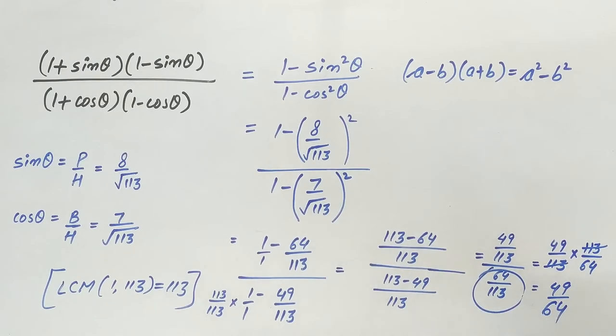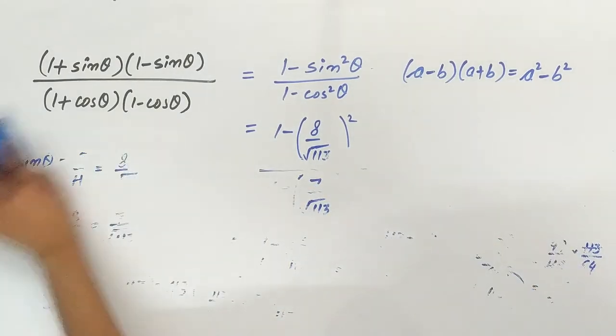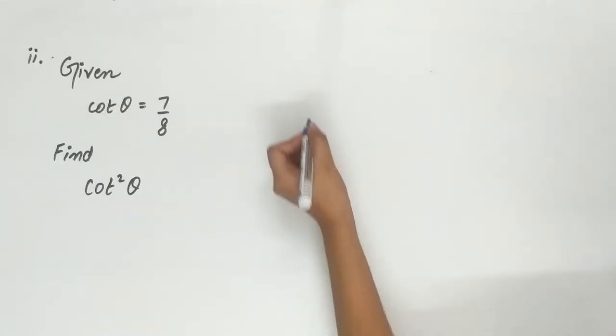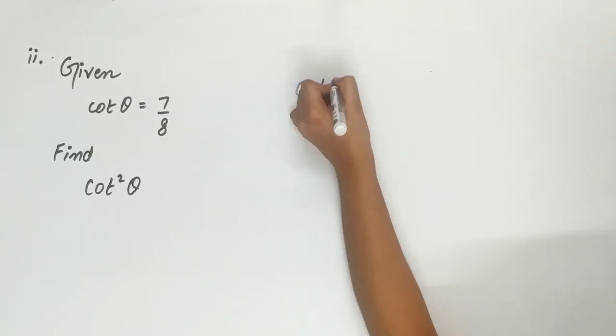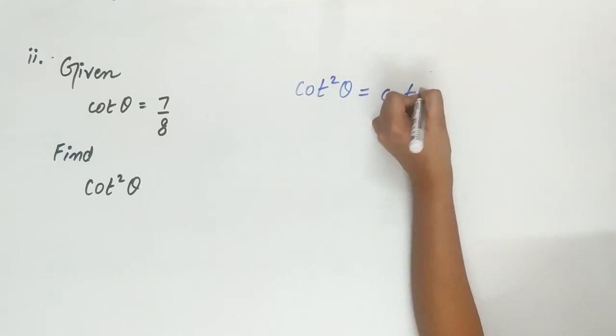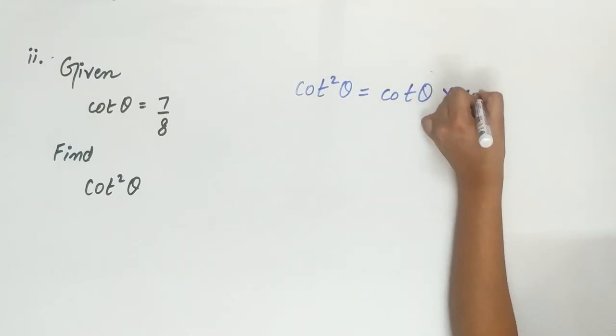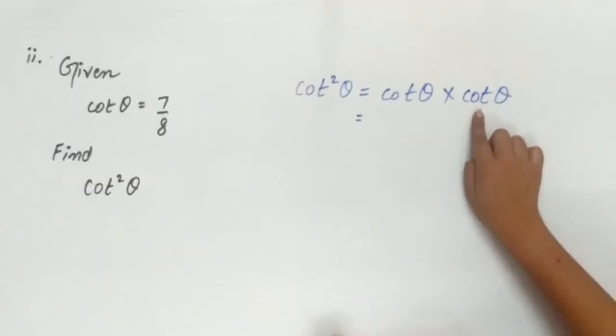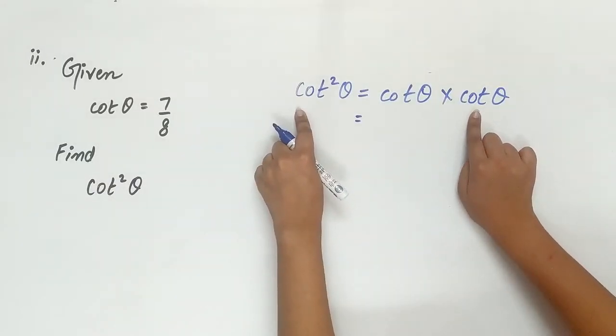This brings us to an end of part 1. Second part says find cot square theta. So can I write cot square theta as cot theta multiply cot theta?